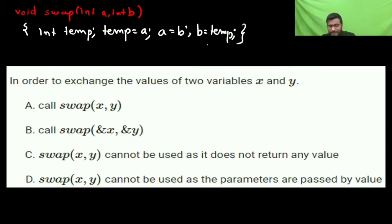You can write this function in a single line also. You have a temporary variable. In the temporary variable you are storing A. Then in A you store B, and in B you store temp.